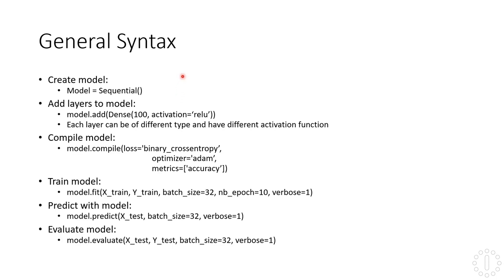Let's look at the general syntax of how we can create a neural network in Keras. First we need to create a model, which we do by creating an object from the Sequential class. Then we just add layers to the model using the add method. We can specify the type of layer we want to use — in this example we use a dense layer, meaning the layer is fully connected, so each neuron in this layer is connected to every neuron in the next layer.